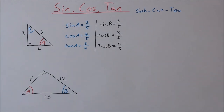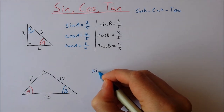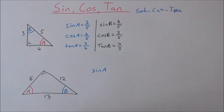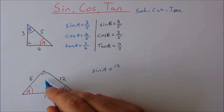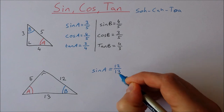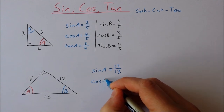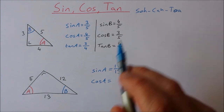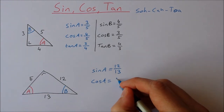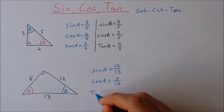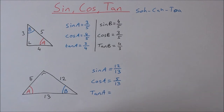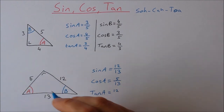Let's move on to our second triangle. I'm going to calculate the sine, cos and tan of A. Sine A — opposite over hypotenuse — opposite is 12, hypotenuse is 13, it's across from the right angle. Cos of A — adjacent over hypotenuse — adjacent is 5, hypotenuse is 13. And then tan of A — opposite over adjacent — opposite is 12, adjacent is 5.